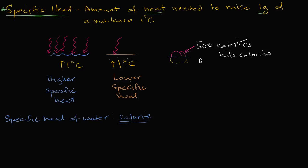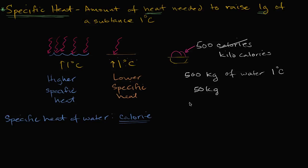There are a couple of ways to think about 500 kilocalories. You could think of it as having enough energy to raise 500 kilograms of water one degree Celsius. Or in more human terms — grown people are roughly 50 to 70 kilograms — a grown male might be composed of about 50 kilograms of water. So that would raise 50 kilograms of water 10 degrees Celsius.